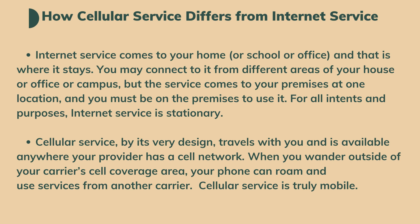How does cellular service differ from internet service? Internet service comes to your home, school, or office, and that is where it stays. You may connect from different areas of your premises, but you must be on-site to use it — internet service is stationary. Cellular service, by its very design, travels with you and is available anywhere your provider has a cell network. When you wander outside your carrier's coverage area, your phone can roam and use services from another carrier. Cellular service is truly mobile.